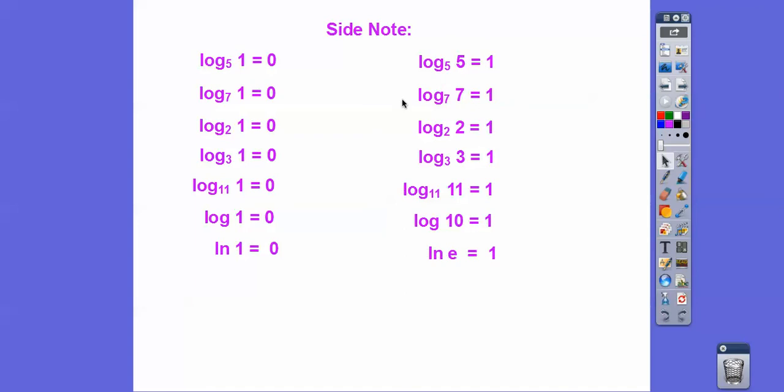Now the reason why they're 1 is this. This base to this power equals this. So log_5(5) = 1. Log_7(7) = 1. Log_2(2) = 1. Log_3(3) = 1. Log base anything of that same base always equals 1. This is understood to be base 10, so log_10(10) = 1. This is understood to be base e, so log_e(e) = 1, because e^1 = e. 10^1 = 10. 11^1 = 11 and so on.